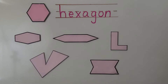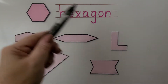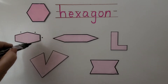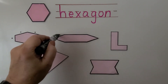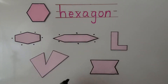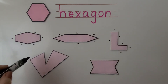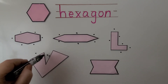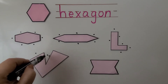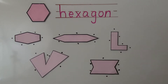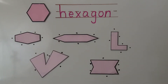But all of these shapes are hexagons too, because they have six sides. We can count: one, two, three, four, five, six sides on each of them. The sides are not equal lengths like a regular hexagon, but they're still hexagons because any shape with six sides is a hexagon.